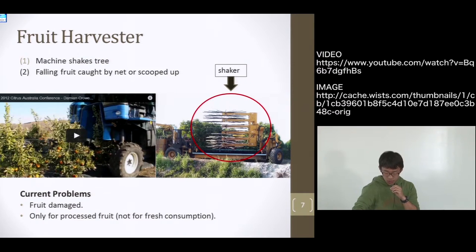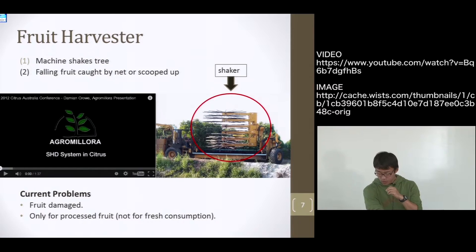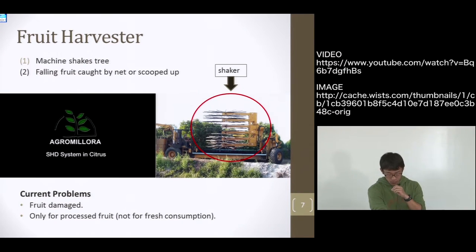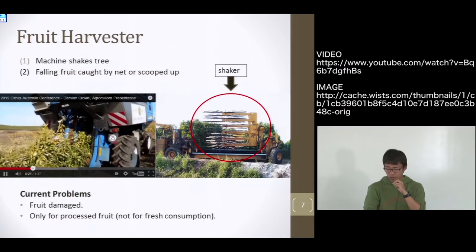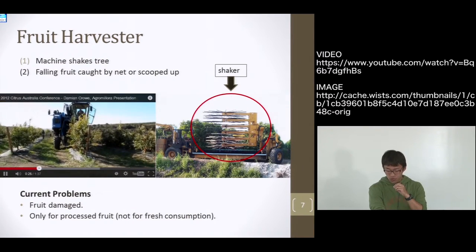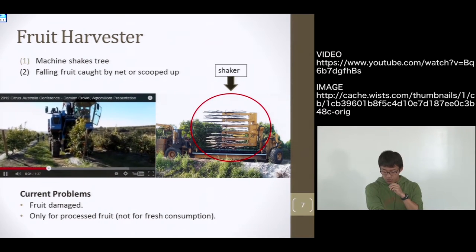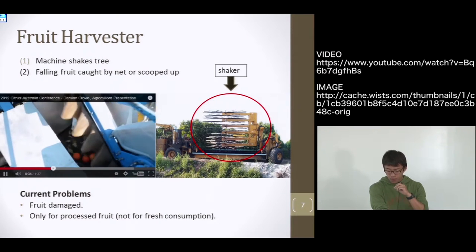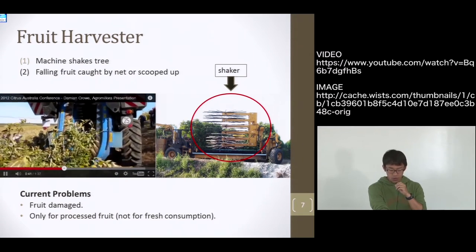And last is fruit harvester. This is fruit harvest. This machine consists in mainly two parts: shaker and collector. First, it shakes tree and drops on a net. Next is collect crops by collecting pot. But it is sure that this has current problems. Fruits are damaged and we can use it only for processed fruits.